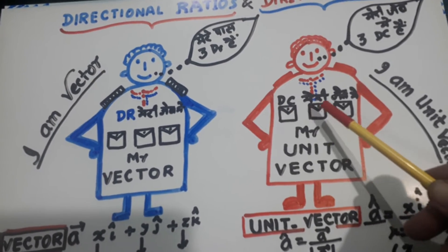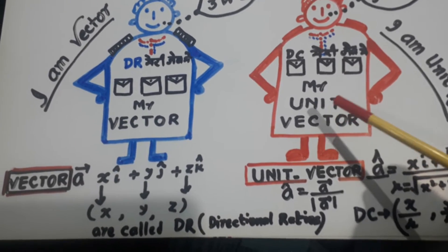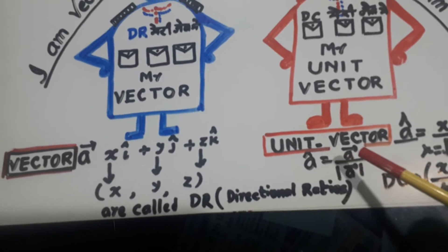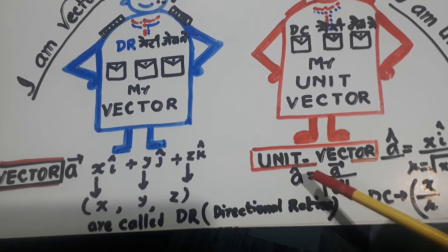DC number one, DC number two, DC number three. He is Mr. Unit Vector. So what is unit vector? Vector divided by magnitude of the vector. That is unit vector.